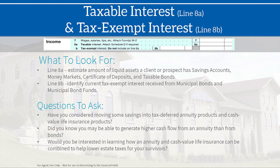Next is taxable interest on line 8A and tax-exempt interest on line 8B. Questions to ask: have you considered moving some of your savings into tax-deferred annuity products or cash value life insurance? Did you know you may be able to generate higher cash flow from an annuity than from bonds — either through penalty-free withdrawals or by annuitizing a contract? An annuity is a strong possibility for reducing taxable interest because those assets become tax deferred.